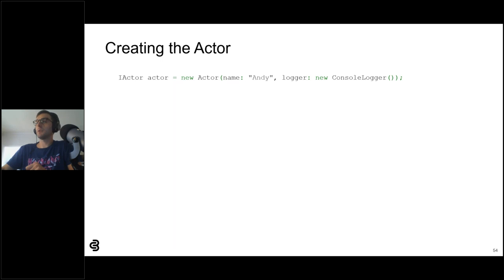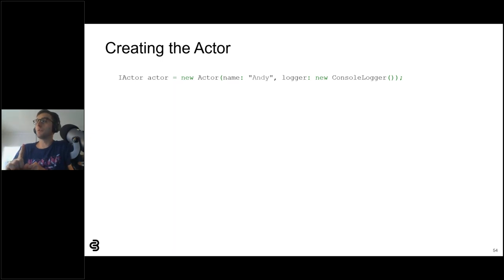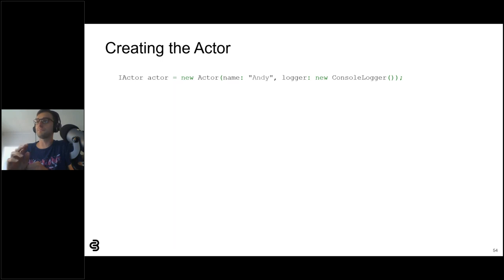Let's start with the Actor. The Actor is the entity that initiates interactions — all screenplay calls start with an Actor. Most test cases need only one Actor. The Actor class optionally takes two arguments: the first is a name that can help describe who the Actor is and will appear in logged messages. The second argument is a logger, which sends log messages from screenplay calls to a target destination. ConsoleLogger is a class that logs messages to the system console, and you can define your own custom loggers by implementing iLogger.